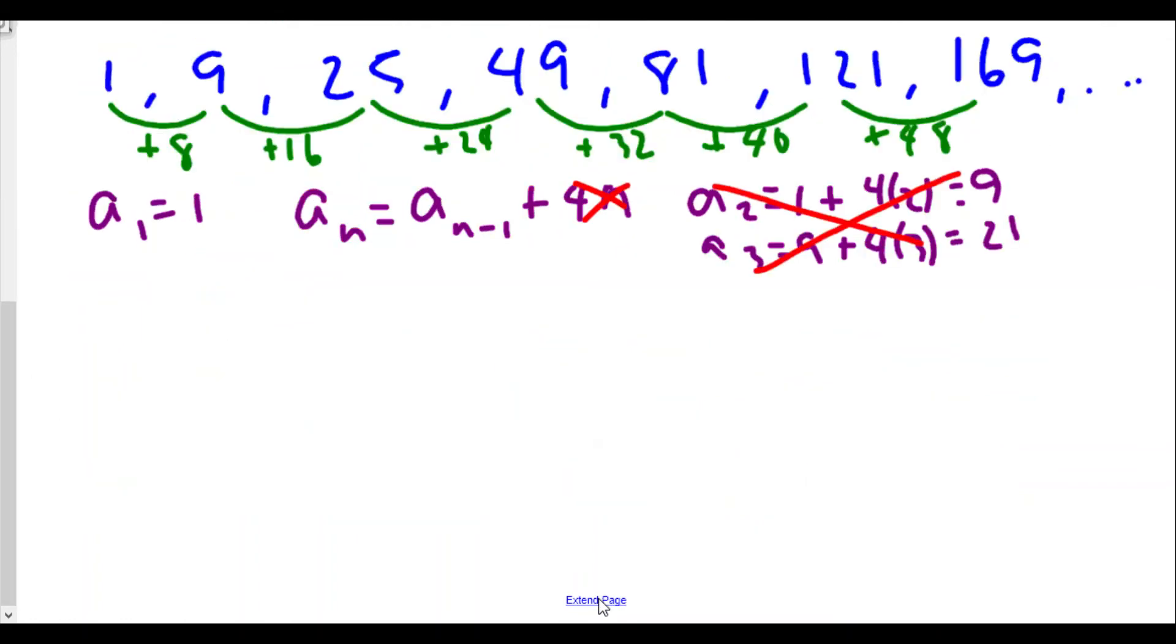Okay so it can't be this one, but we definitely want to add by eight every single time. Wait a minute, so we want to add by eight, so maybe instead of four times n, I want to use in this case an equals the first number a minus one plus in this case eight times n minus one.